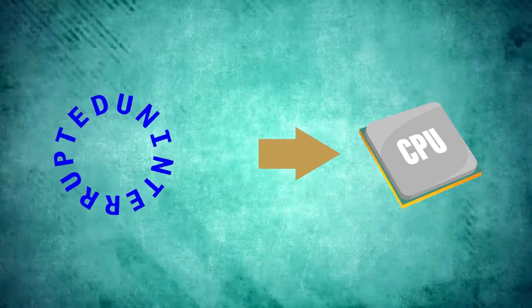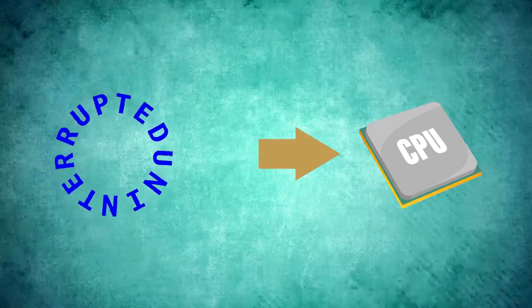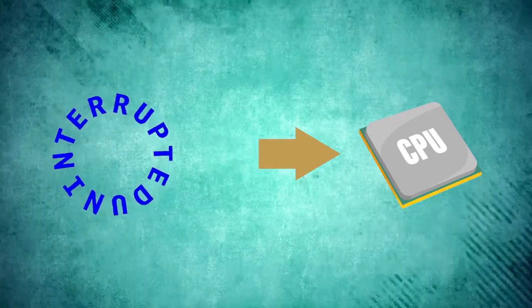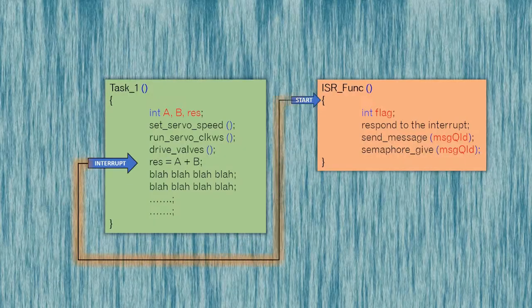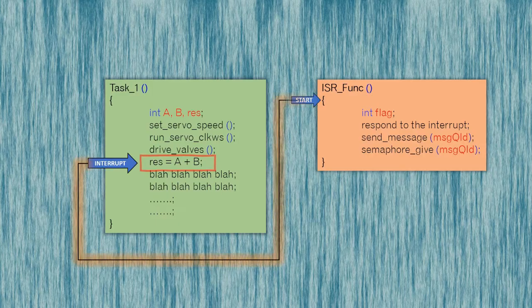Let's suppose some routine task or thread was executing and an external interrupt occurs. Let's say this instruction was half completed, or just partially completed, when the interrupt occurred.